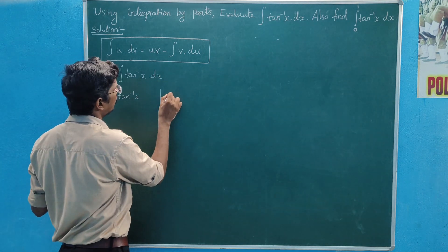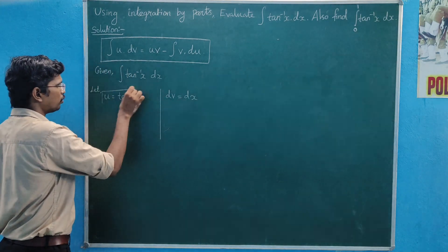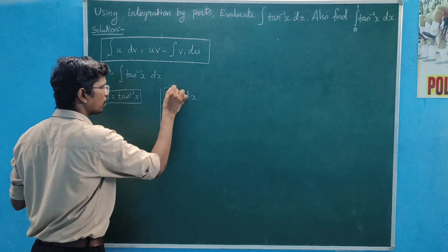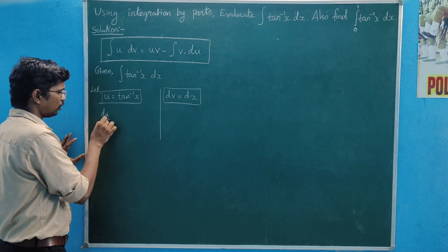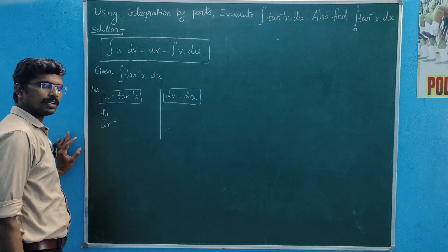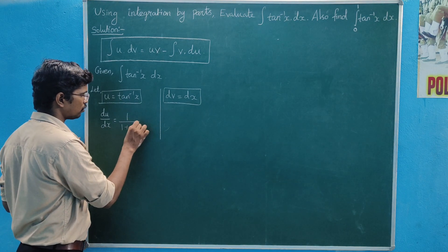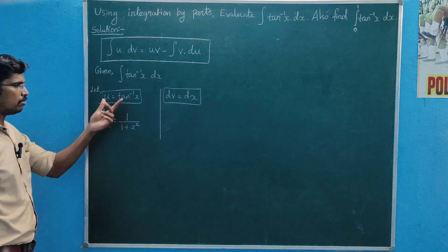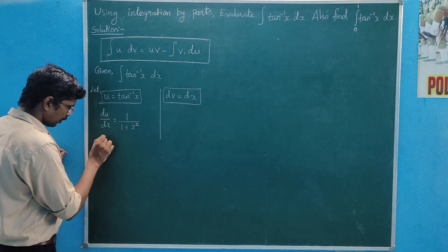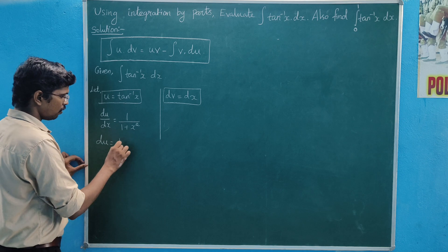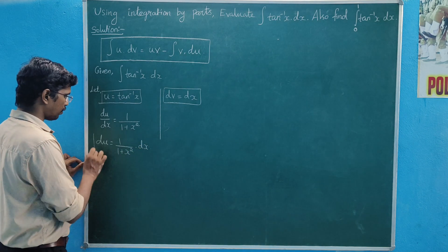dx, then dv equal to dx. Then u is equal to tan inverse x. So du/dx, then u is equal to x over the division, then du is equal to 1 divided by x square. du is equal to 1 divided by 1 plus x square.